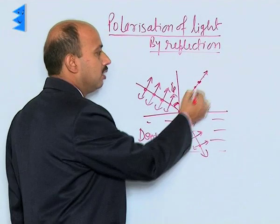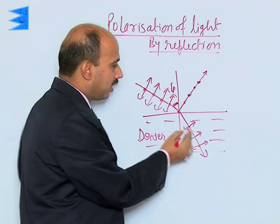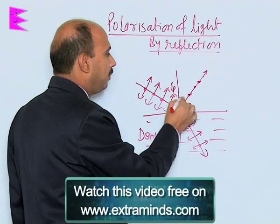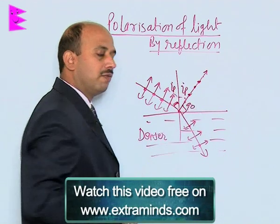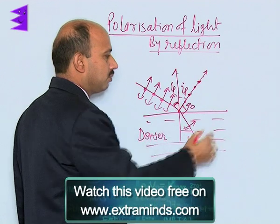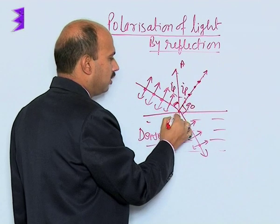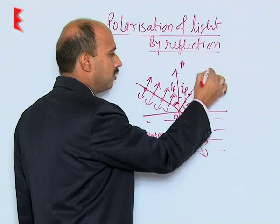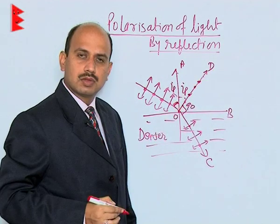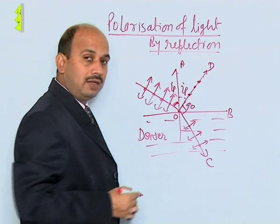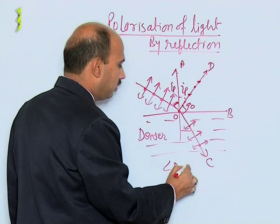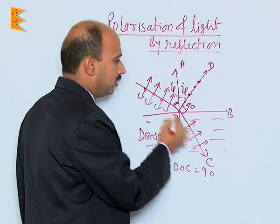Whenever this polarization is taking place, the angle between this polarized reflected light and the refracted ray is 90 degrees. We can write this as Ip, and this is also Ip because the angle of incidence equals the angle of reflection. Taking points O, A, B, C, and D in the diagram, when light is getting polarized, angle DOC is equal to 90 degrees.